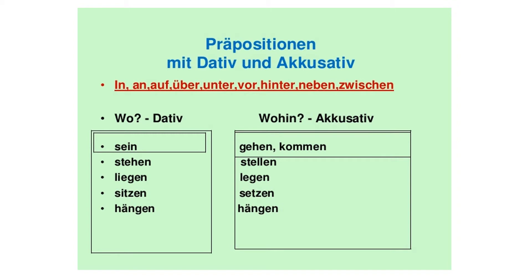Es gibt insgesamt neun Präpositionen, die man mit Dativ und Akkusativ benutzen kann. Und die Präpositionen sind: in, an, auf, über, unter, vor, hinter, neben und zwischen. Das Sprachwort 'wo' benutzt man für Dativ, und das Sprachwort 'wohin' benutzen wir für Akkusativ.